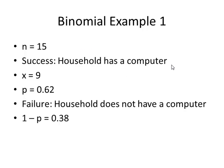Let's take a look at all this information filled out. n was 15. The success is that a household has a computer because we were looking for the probability that nine households had a computer. The probability of success is 0.62. We were given that the percentage of households that had computers was 62%. The failure is the complement of the success, so a household does not have a computer. And one minus 0.62 is 0.38.